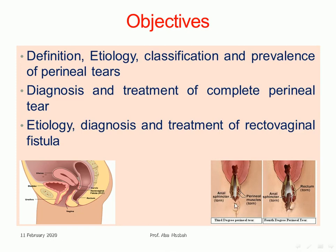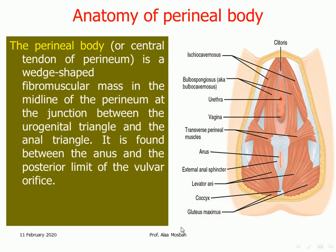As you see in this picture, this is the third degree perineal tear, this is the fourth degree perineal tear, and this is recto-vaginal fistula. Let us start with the anatomy of the perineal body, which is the central tendon of the perineum — a fibromuscular mass in the midline of the perineum at the junction between the urogenital triangle and the anal triangle. It is found between the vulval opening and the anus posteriorly. This part is the perineal body.